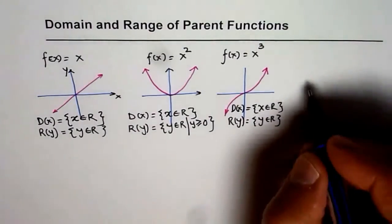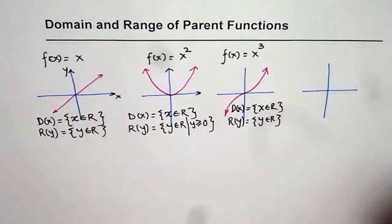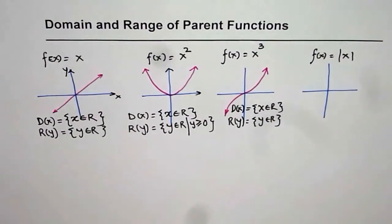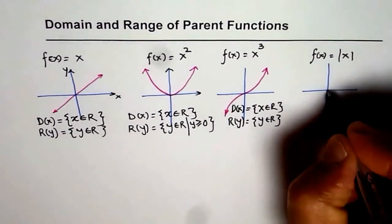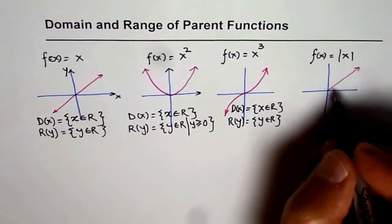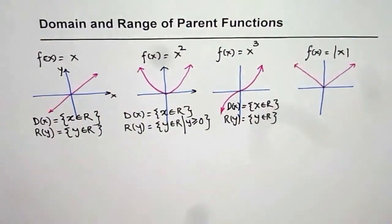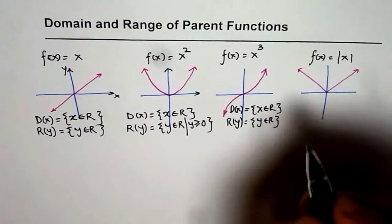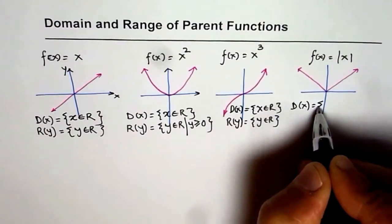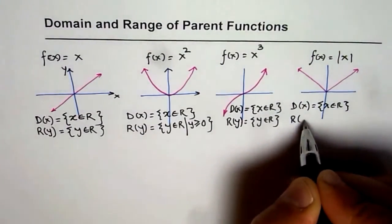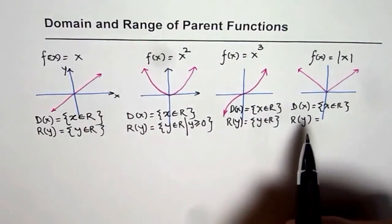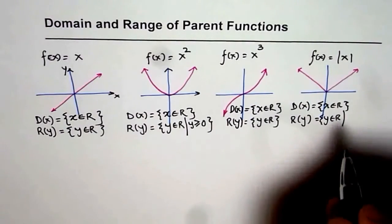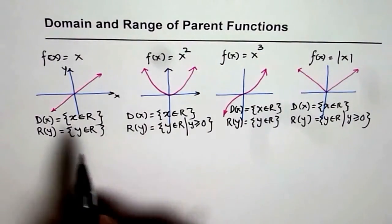Now the next parent function is absolute value: f of x equals to absolute x. Absolute x looks like line y equals to x in the first quadrant, but line y equals to minus x in the second quadrant. As you can see, domain here is not restricted — it is the set of all real numbers — but the range is restricted. Just as f of x equals to x square, the absolute value function has a range which is y belongs to real numbers, but y is greater than or equal to 0.